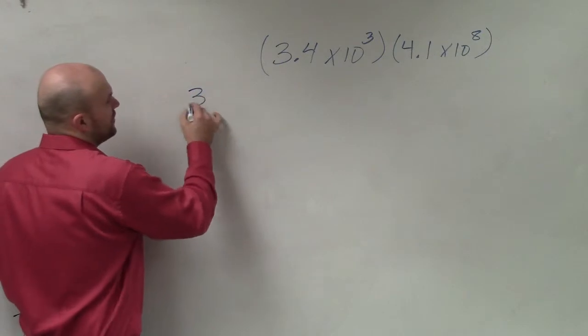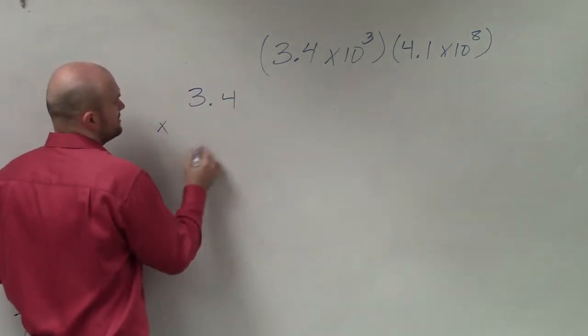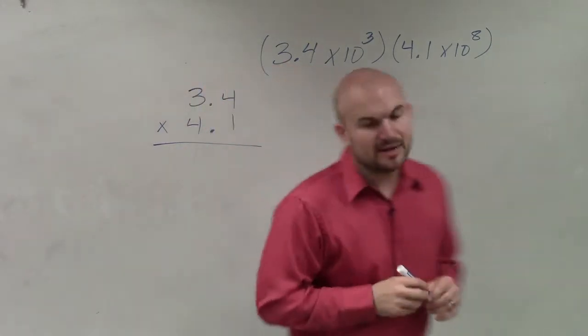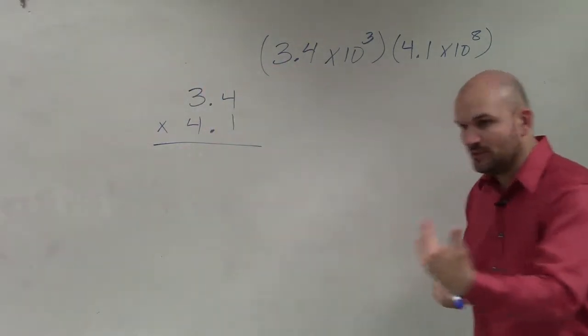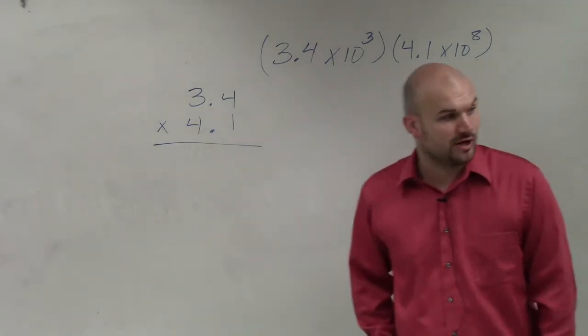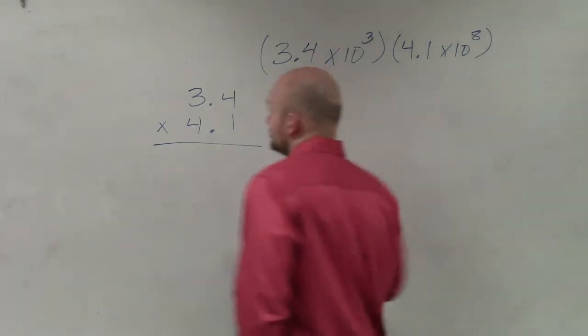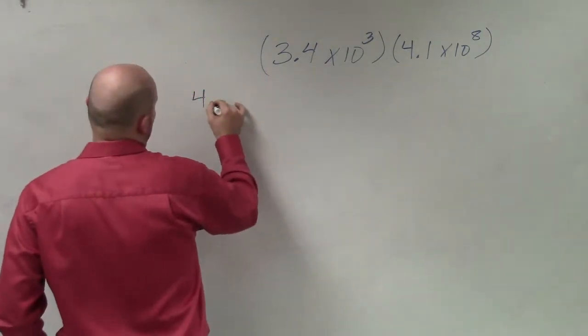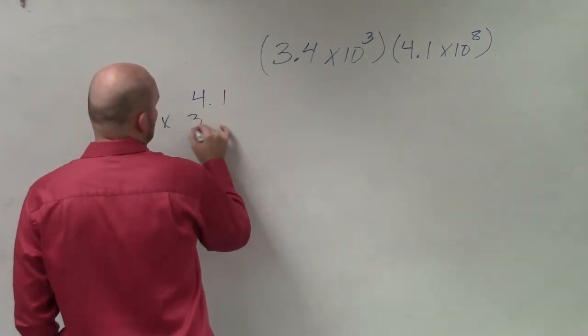So the first thing we're going to want to do is multiply 3.4 times 4.1. Now, if you guys remember, when we're multiplying with decimals, we always want to multiply our smaller number on the bottom. So I'm actually going to rewrite this as 4.1 times 3.4.